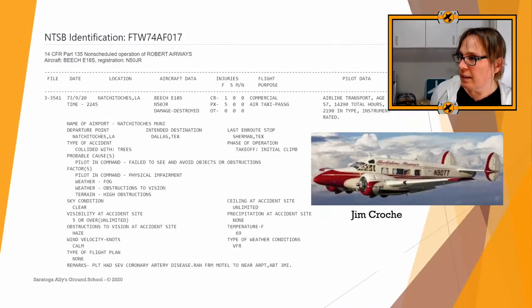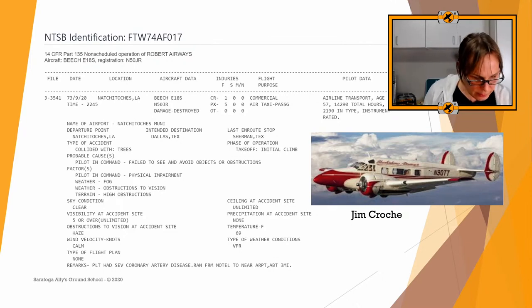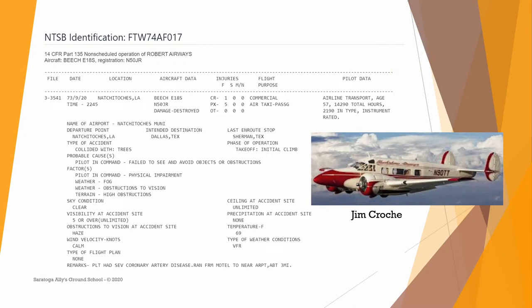The Jim Croce incident: this pilot had run three miles to the airport. Look at the number of hours — 14,000 hours and 2,200 hours in that specific aircraft. Instrument rated. A really experienced pilot. But he had severe coronary artery disease. He probably felt a lot of external pressures knowing who he was flying, to get there on time. It was a twin Bonanza that can hold about eight people. As soon as they got to the end of the runway, he clipped a tree.